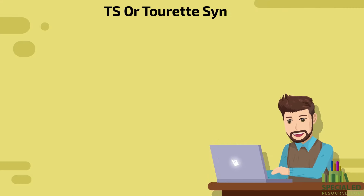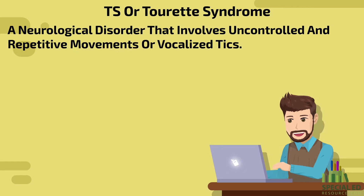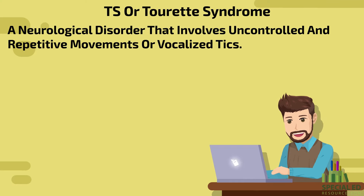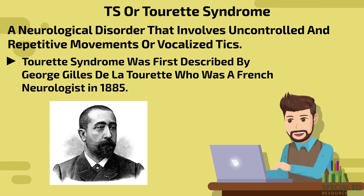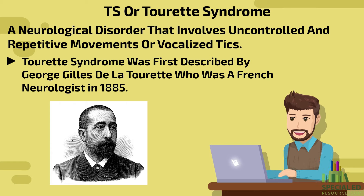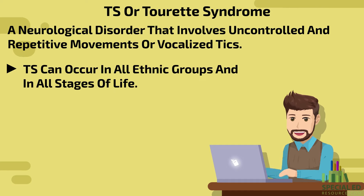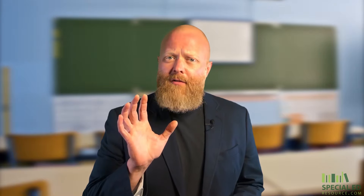TS, or Tourette syndrome, is a neurological disorder that involves uncontrolled and repetitive movements or vocalized tics. Tourette syndrome was first described by a French neurologist, George Gilles de la Tourette, in 1885. TS can occur in all ethnic groups and in all stages of life. Symptoms of Tourette syndrome usually start at a younger age.